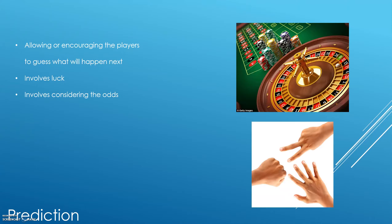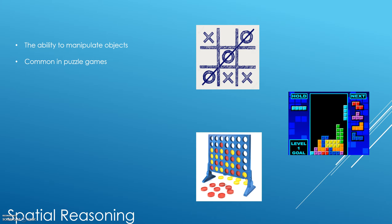Another popular core dynamic is Prediction, which allows or encourages the player to guess what will happen. Much of the time the player's prediction involves luck or the consideration of odds — examples include roulette or rock, paper, scissors. Spatial Reasoning is the ability to manipulate objects, very common in puzzle games. Tic-tac-toe and Connect 4 are good examples. In the digital world, Tetris is a popular version, and it also appears in puzzle elements of video games such as the Tomb Raider series.